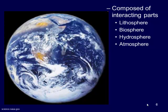The Earth is also composed of some interacting parts — interacting spheres as we call them. We have the lithosphere, the rocks and plates of the Earth; the biosphere, the life present on the Earth; the hydrosphere, which is the water — oceans, lakes, rivers; and the atmosphere, what's happening up in the air in regards to climate, weather, clouds, and things like that.